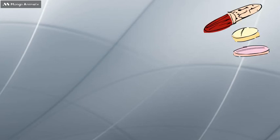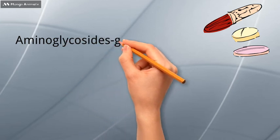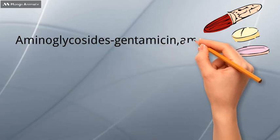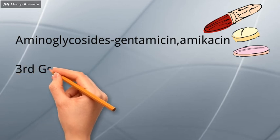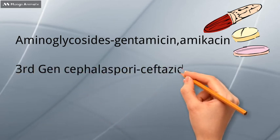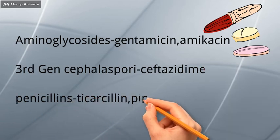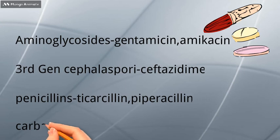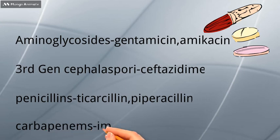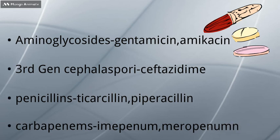Pseudomonas aeruginosa shows resistance to many antibiotics and disinfectants. However, it can be treated with aminoglycosides like gentamicin and amikacin, and also by ceftazidime, which is a third-generation cephalosporin. It can also be treated with anti-pseudomonas penicillins like ticarcillin and piperacillin, and also by carbapenems including imipenem and meropenem.